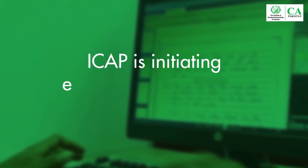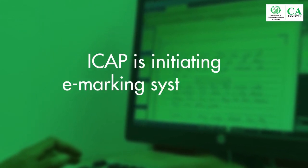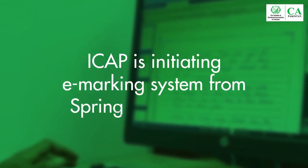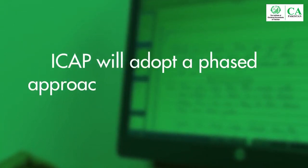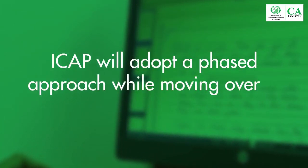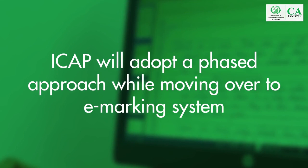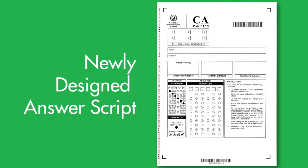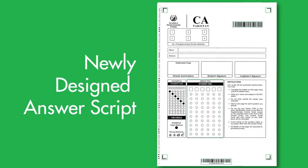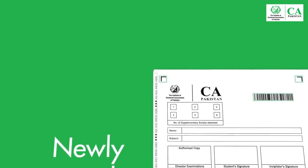ICAP is initiating an e-marking system from the spring 2019 attempt. ICAP will adopt a phased approach while moving over to the e-marking system. In order to meet the requirements of the e-marking system, ICAP has redesigned its answer script with machine readable features.